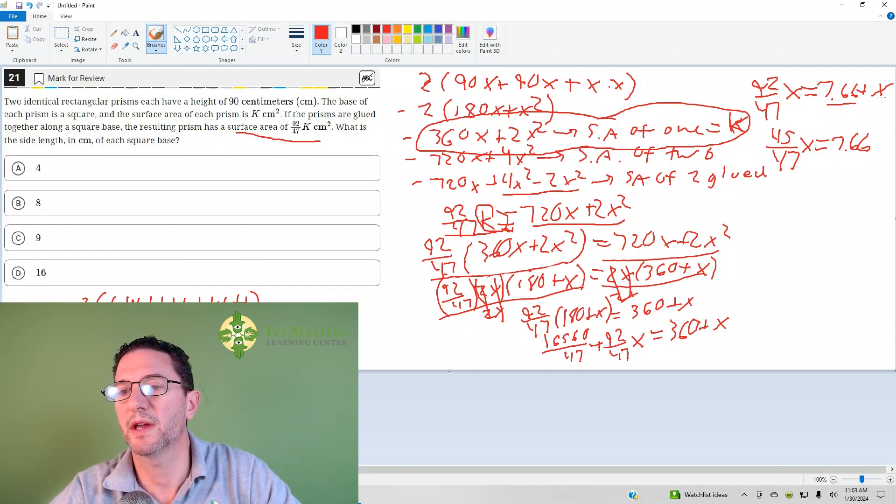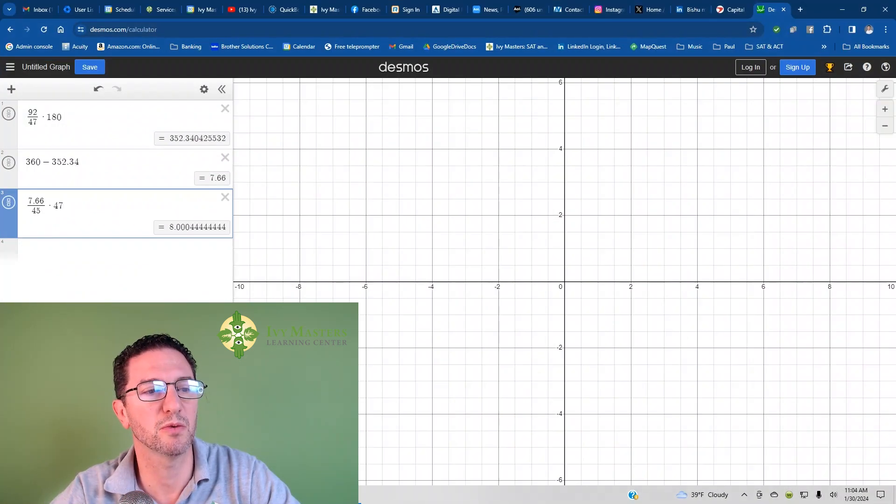And now, what do I got to do? I got to get this x to the other side. So, 92 over 47. I know we're mixing fractions and decimals, but that's the same as 47 over 47. If I subtract 47x over 47 from 92 over 47, I get 45x over 47 equals 7.66. Then, you got to multiply both sides by the reciprocal. You multiply 7.66 by 47 over 45. I threw that into Desmos as well. And you get it here, 8.000. And then, the fours keep going.